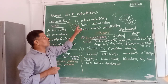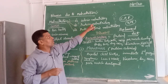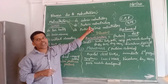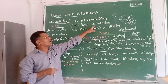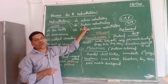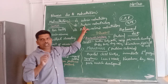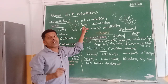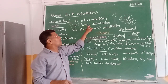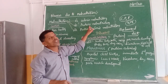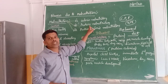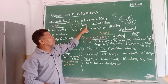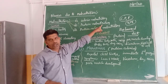Now moving to the second type: protein malnutrition. The word itself clearly indicates that there is a deficiency of proteins. If the child is not given even the required quantity of proteins, then the child is said to be suffering from protein malnutrition.